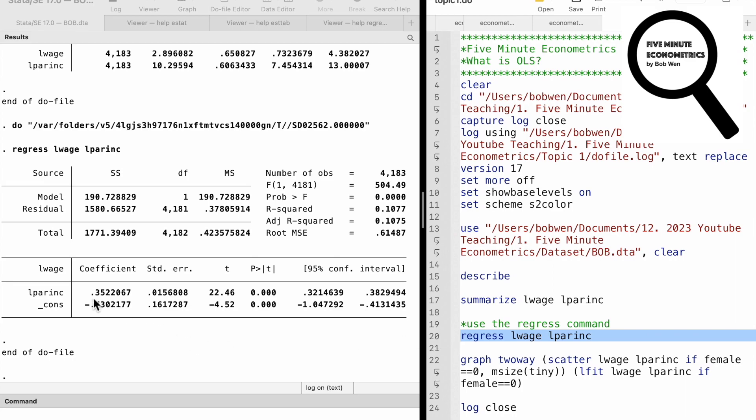The estimated coefficient on the explanatory variable is 0.35. It implies that if the parent's income increases by 10%, their children's wages will increase by 3.5% on average after they grow up.